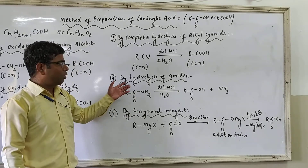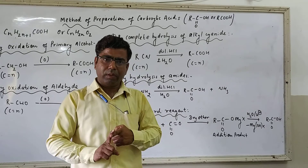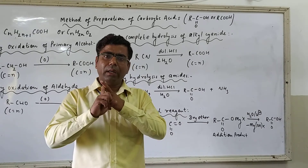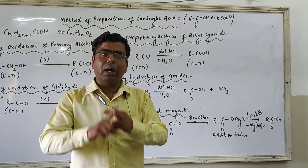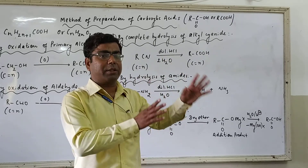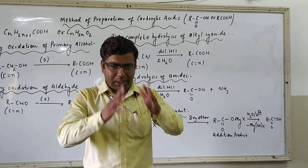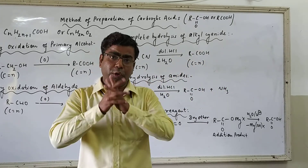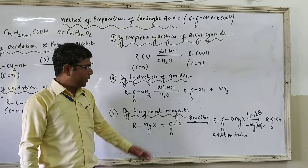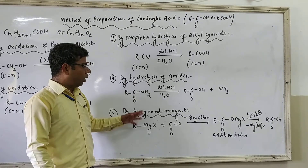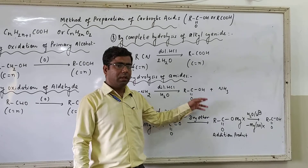The next method is by the hydrolysis of amides. The reaction of complete hydrolysis of RCN takes place in two steps: RCN utilizes the first molecule of water and gets converted to acid amide (RCONH₂). Then acid amide utilizes the second molecule of water and gets converted to RCOOH. So RCN first gets converted to RCONH₂, and RCONH₂ then gets converted to RCOOH. We can also use acid amide directly for the preparation of carboxylic acid. RCONH₂ in the presence of dilute acid undergoes hydrolysis, utilizing one molecule of water, and gets converted to RCOOH with the removal of NH₃.